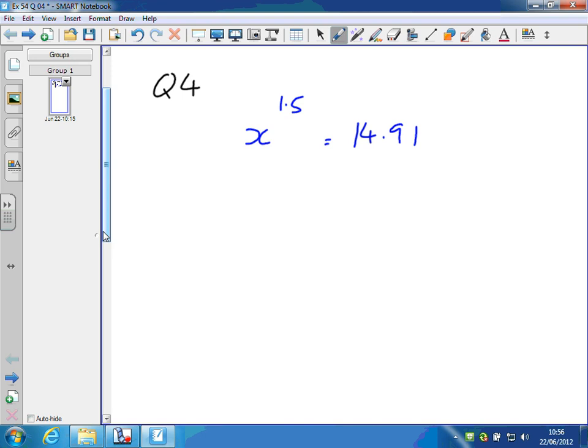So what we do again, take logarithms of both sides, and because we've taken logarithms, the 1.5 can come down and become a multiply. So 1.5 log x equals log 14.91.